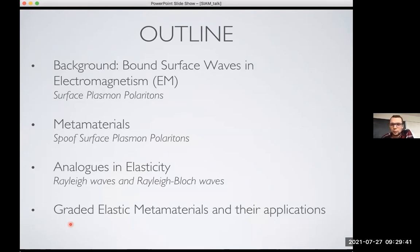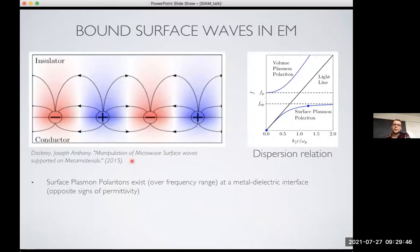So then I'll hopefully be able to convince you that we have some cool little devices that can control elastic waves for a variety of purposes. So basically, the things that I am interested in are surface waves. So these are waves which propagate along an interface, and in electromagnetism, these are called surface plasmon polaritons, and they exist at the boundary between a conductor and an insulator, so metal and air or something like this.